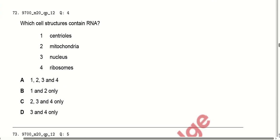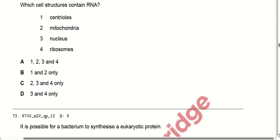Which structures contain ribosomal RNA? Centrioles — no. Mitochondria have their own RNA. The nucleus has its own RNA and ribosomes. Option C is correct.